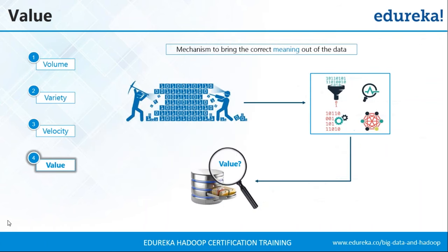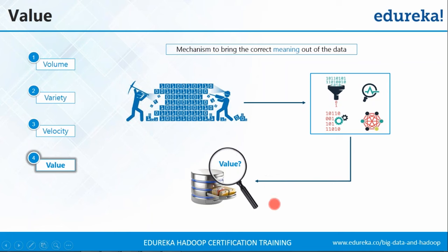The bigger problem is how to extract the useful data from here, and that's when we come to our fourth V: value. You need to mine the useful content from your data, making sure you have only useful fields in your dataset. After that you perform certain analytics on the cleaned data and make sure that whatever analysis you've done is of some value — it will help your business grow and find certain insights that were not possible earlier. Getting the value out of this data is one big challenge, which brings us to the fifth V: veracity.